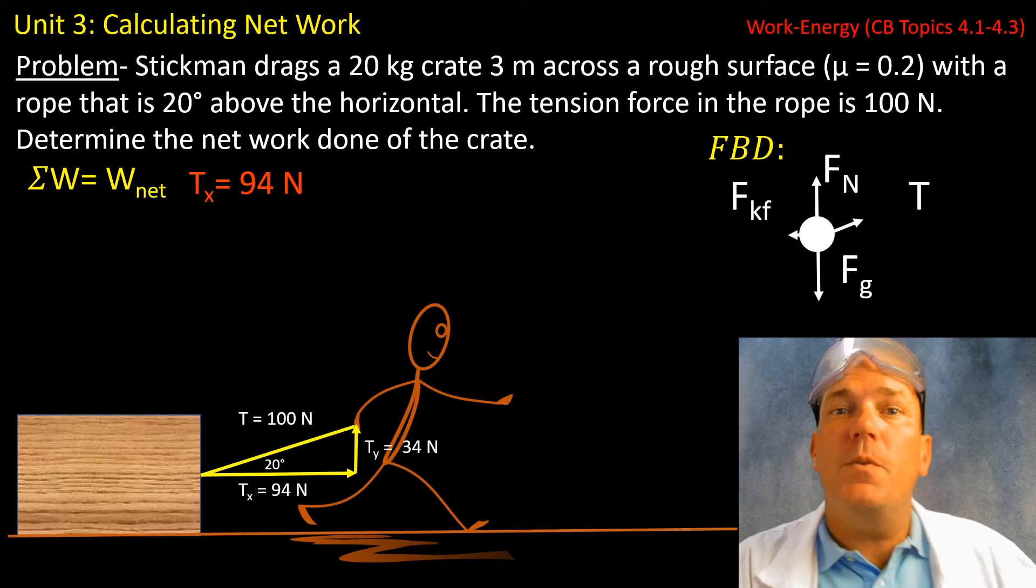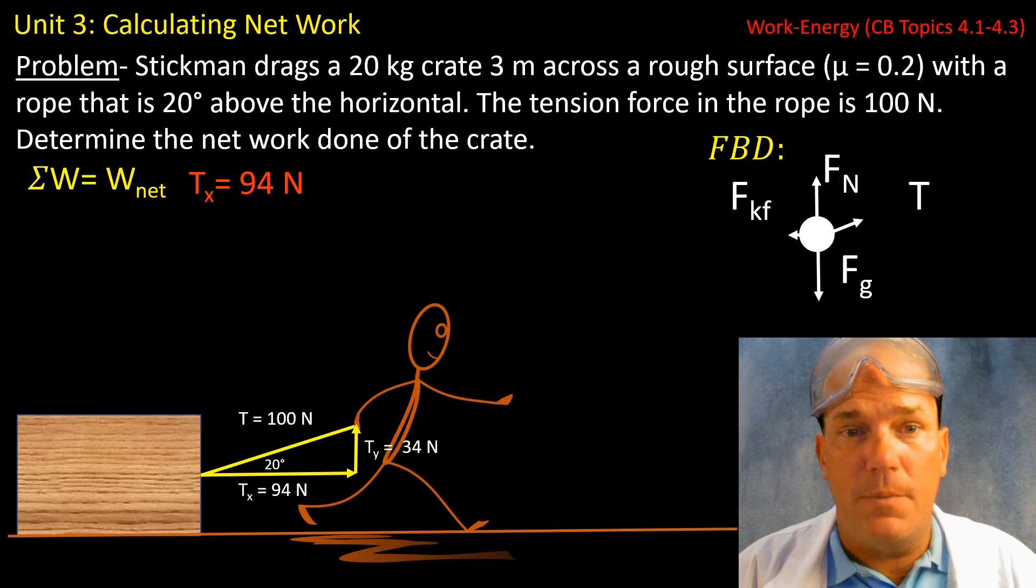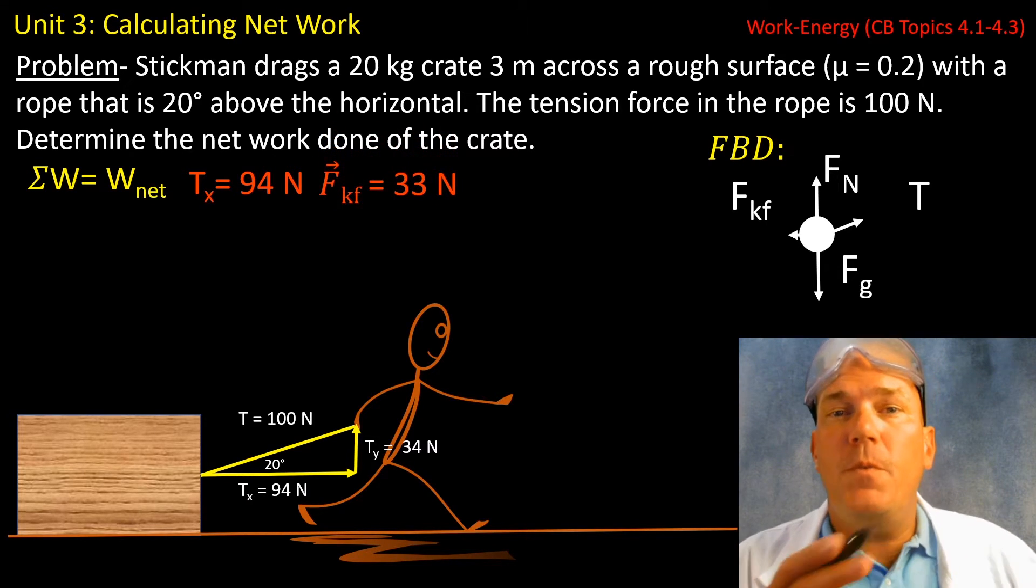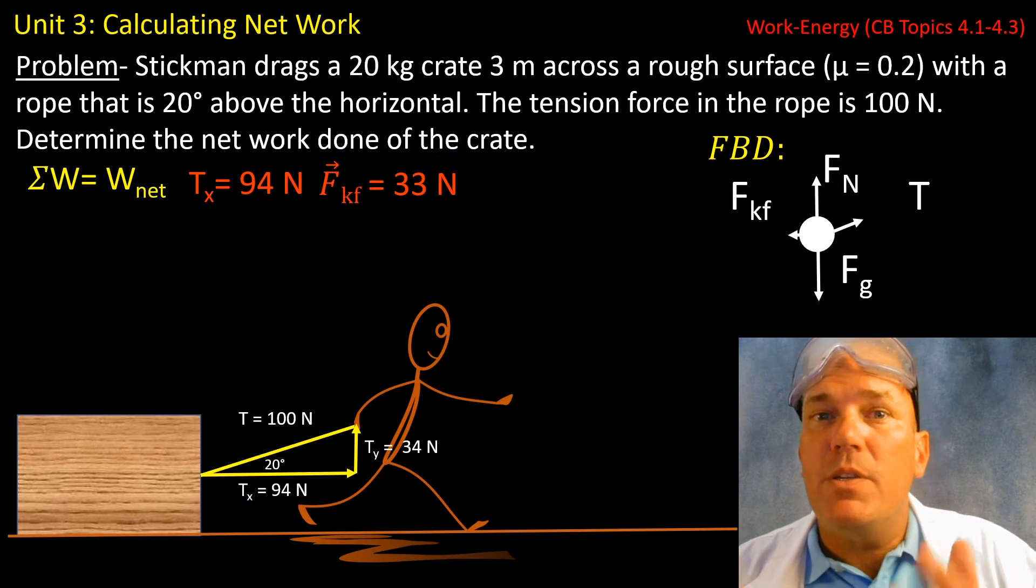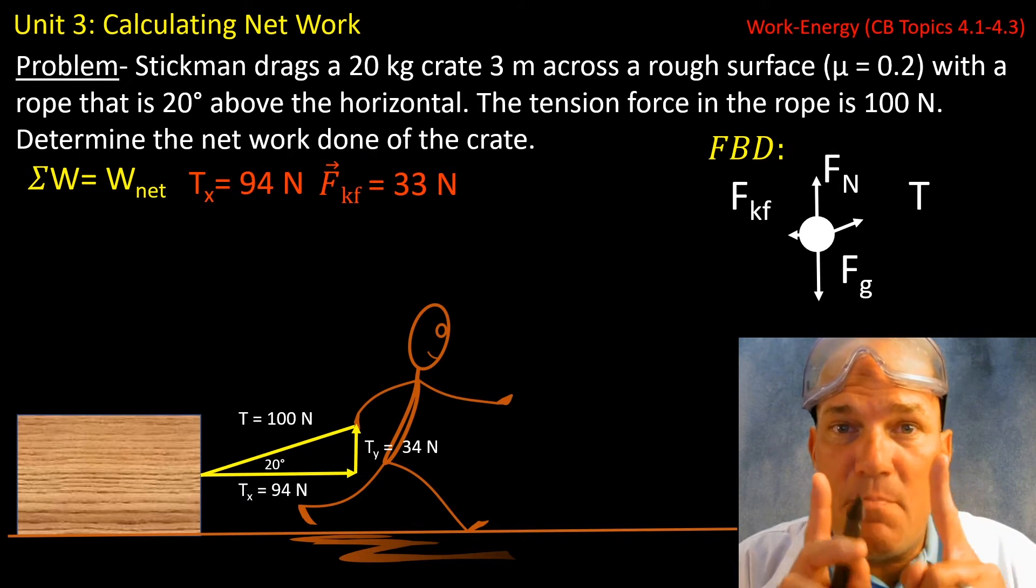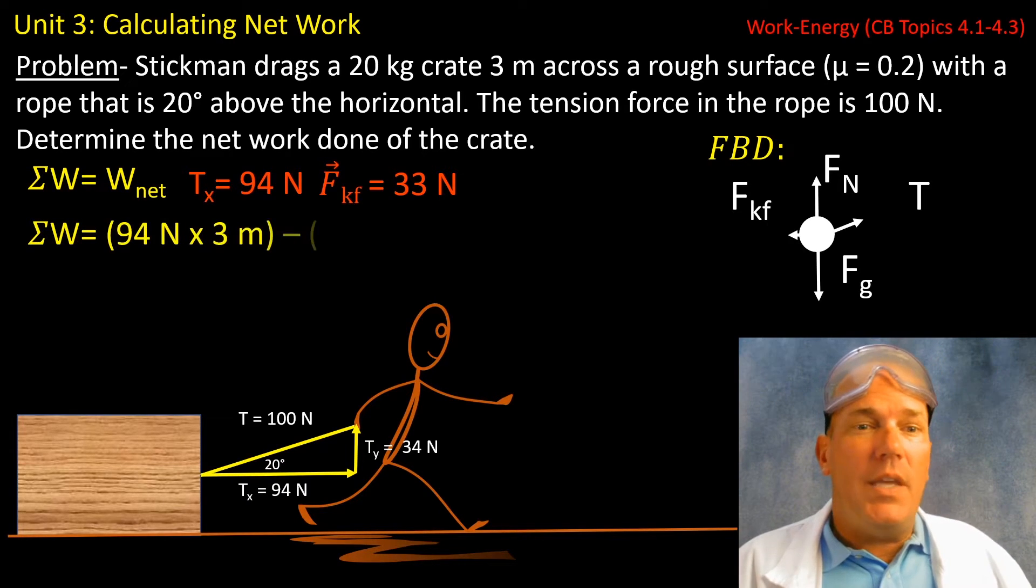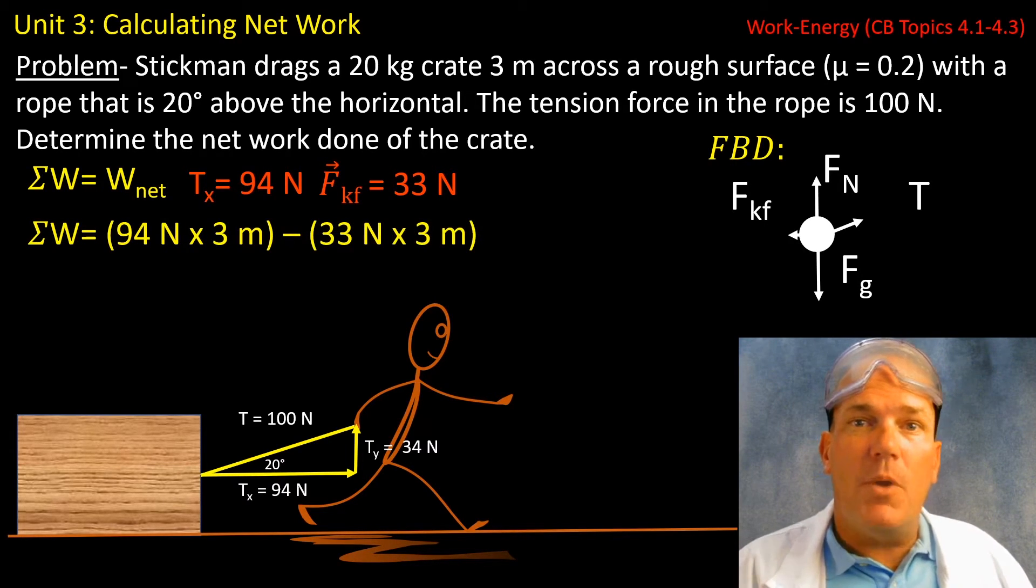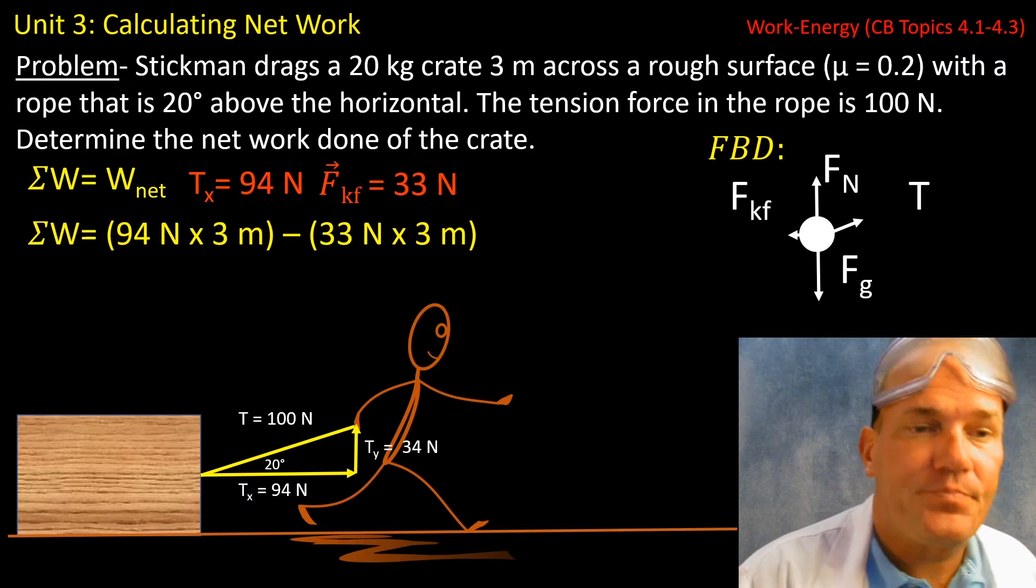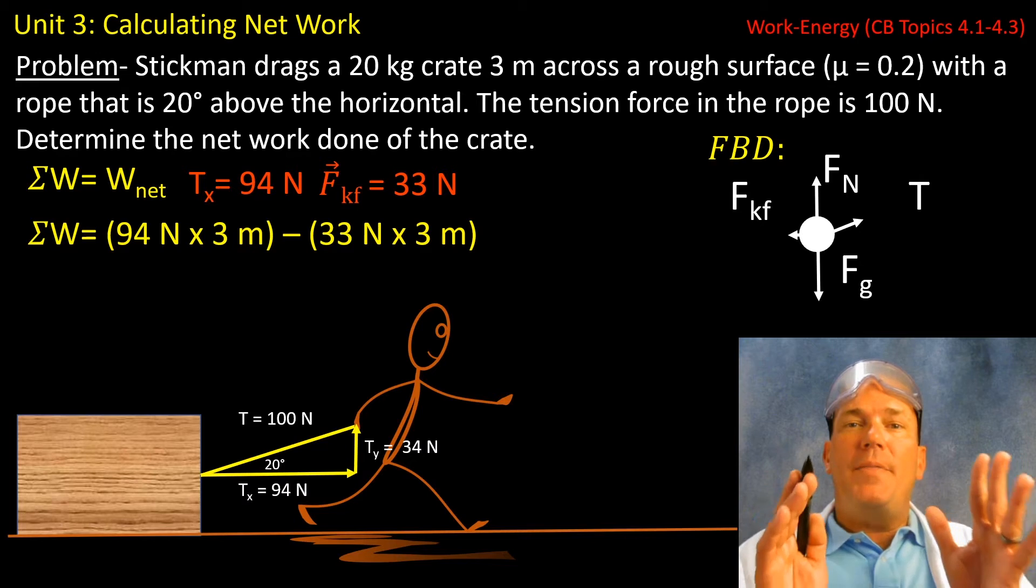We found the tension force in the right direction, our positive direction, to be 94 newtons. We found the force of kinetic friction acting to the left to be 33 newtons in magnitude. So now all we need to do is take each respective force and multiply it by the distance. So we have 94 newtons multiplied by 3 meters.